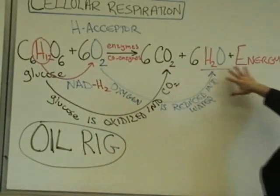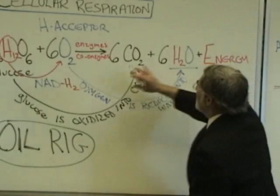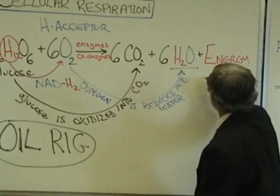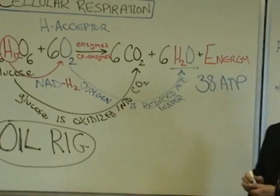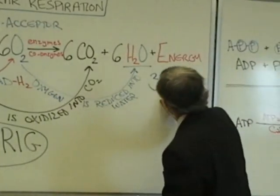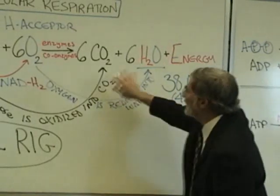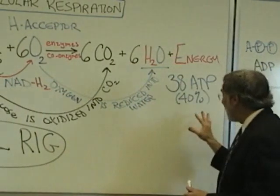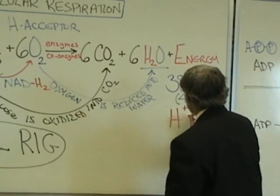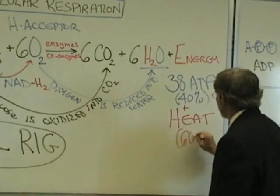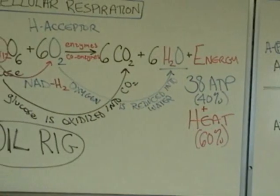The energy released from cellular respiration is used to make ATP. The energy from breaking apart glucose is enough to produce 38 molecules of ATP. However, that only accounts for about 40% of the energy released from breaking apart the sugar. What happened to the remaining 60%? It was released as heat — more than half of the energy that was released from breaking apart the sugar.